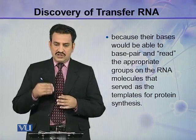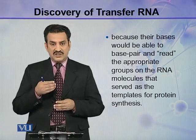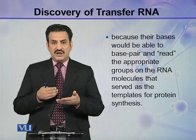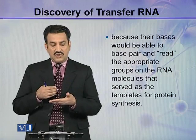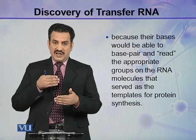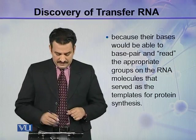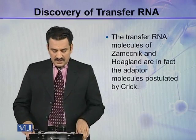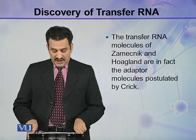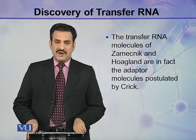On the tRNA there are some specific bases present, and these bases can read compatible bases on the mRNA or adapter or template RNA, and they can base pair with these template RNA bases. The transfer RNA molecules of Zamecnik and Hoagland are in fact the adapter molecules postulated by Crick.